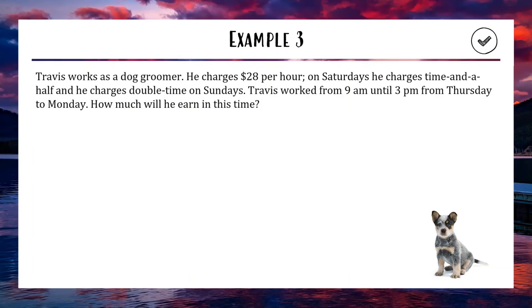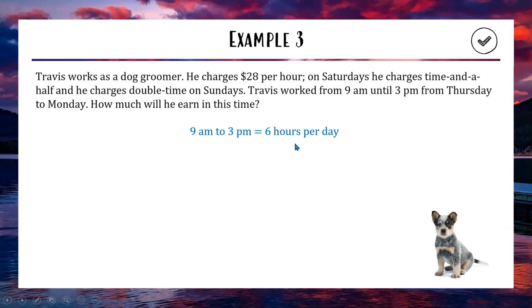Example three: Travis works as a dog groomer charging $28 per hour. On Saturdays he charges time and a half — meaning for every hour worked he gets paid for one and a half hours. On Sundays he charges double time, so one hour worked is paid as two hours ($56). Travis worked from 9am to 3pm — that's six hours per day — from Thursday through to Monday. We need to figure out his total pay, accounting for the overtime rates on Saturday and Sunday.